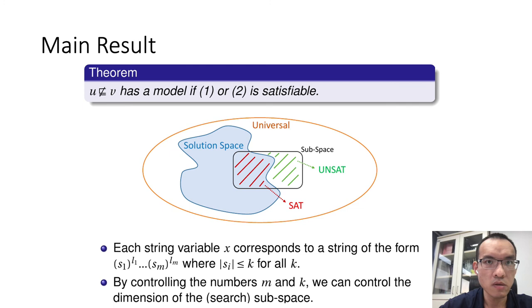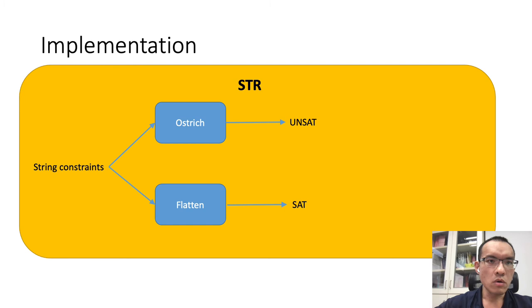To demonstrate the performance of our approach, we implement a prototype tool, STR. Inside STR, we have two engines. When received a string constraint, we copy the constraint and send it to the two internal solvers in parallel. The OSTRICH solver is from some existing work and is responsible for answering unsat. The flattening approach is the technique introduced in this paper and it can only answer sat. This is the main focus of our paper.